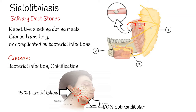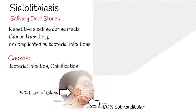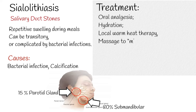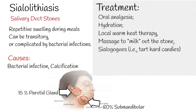Sialolithiasis is commonly diagnosed and treated by dentists and otolaryngologists. Typically, stones less than 2 mm in diameter can be treated without surgical intervention. A conservative approach includes oral analgesia, hydration, local warm heat therapy, massage to milk out the stone, sialogogues — i.e., tart hard candies — to promote ductal secretions, and discontinuation of anticholinergic medications when possible.